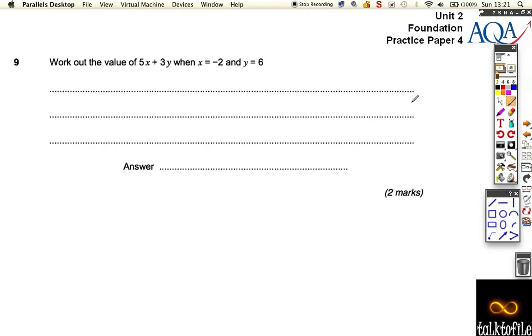Right, question number nine. We're asked to work out the value of 5x plus 3y, where x and y are different numbers. Well, the best thing to do is break this down. So before you add them up, work out what 5x is.